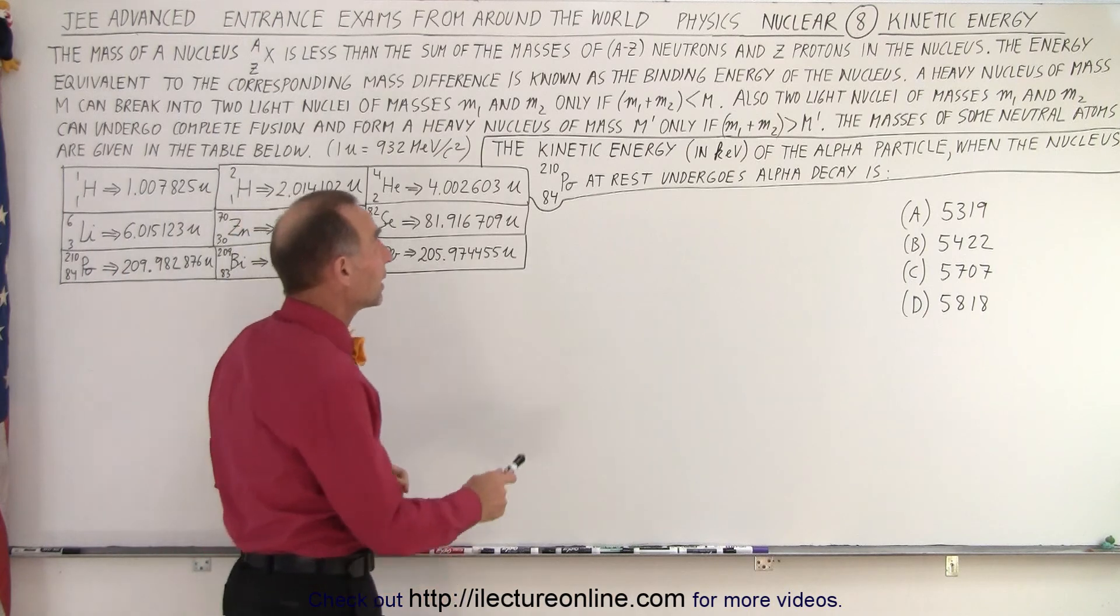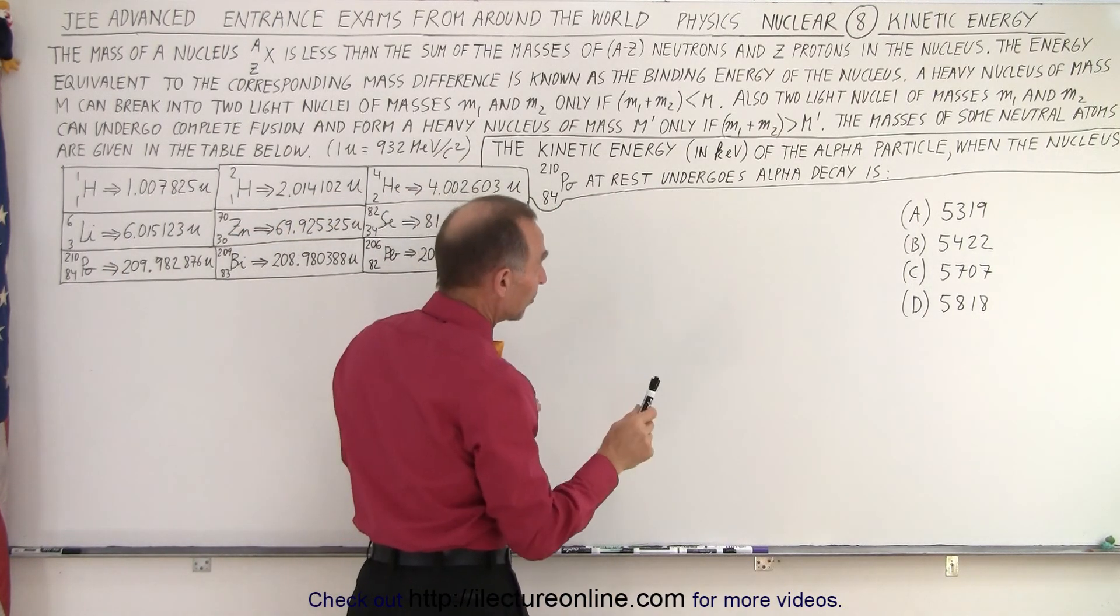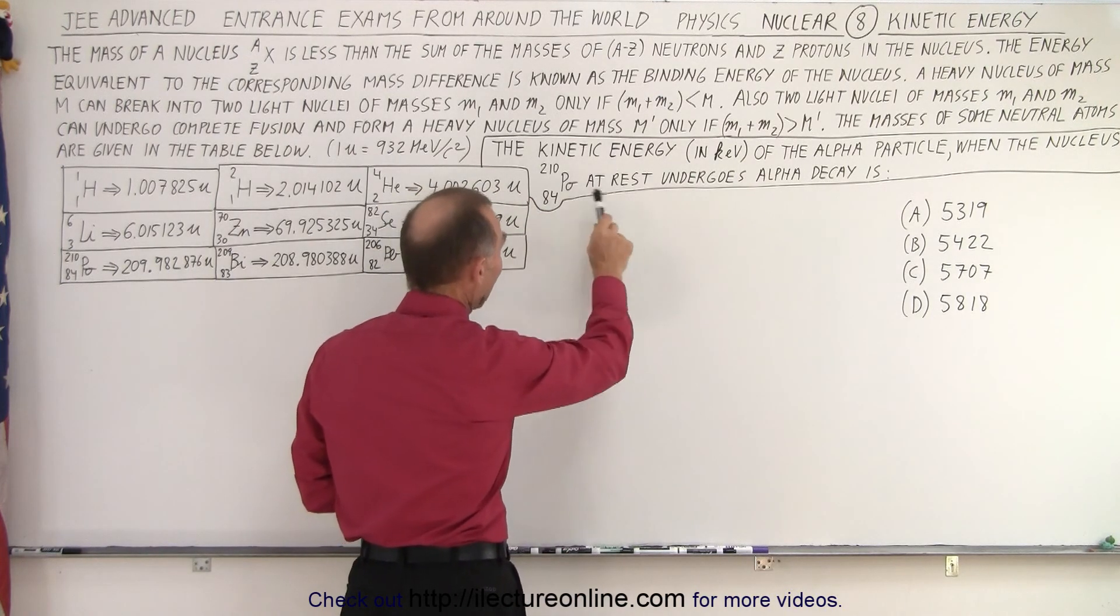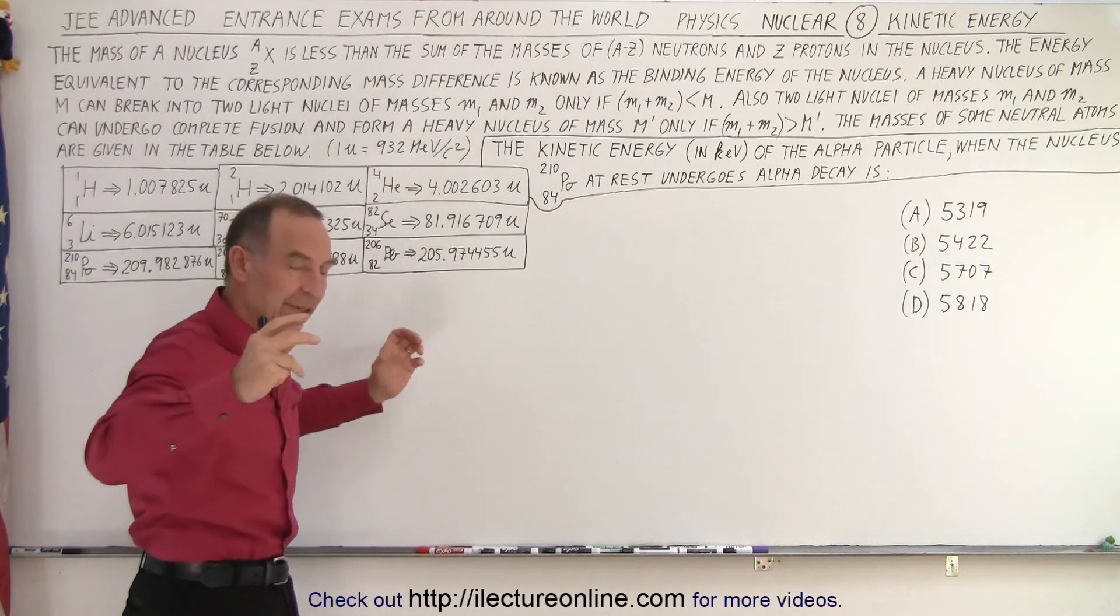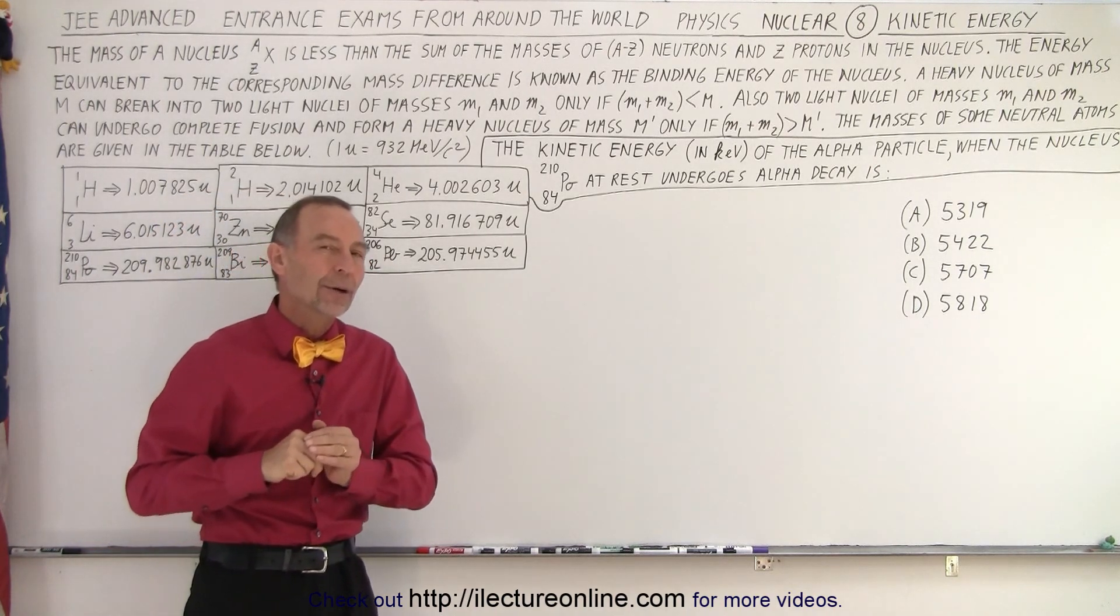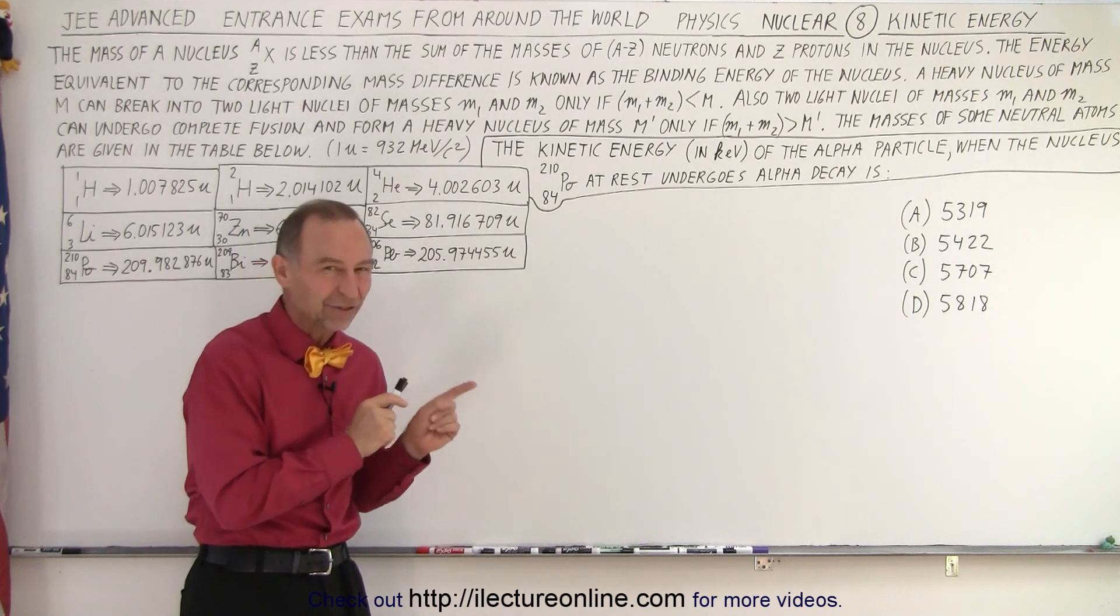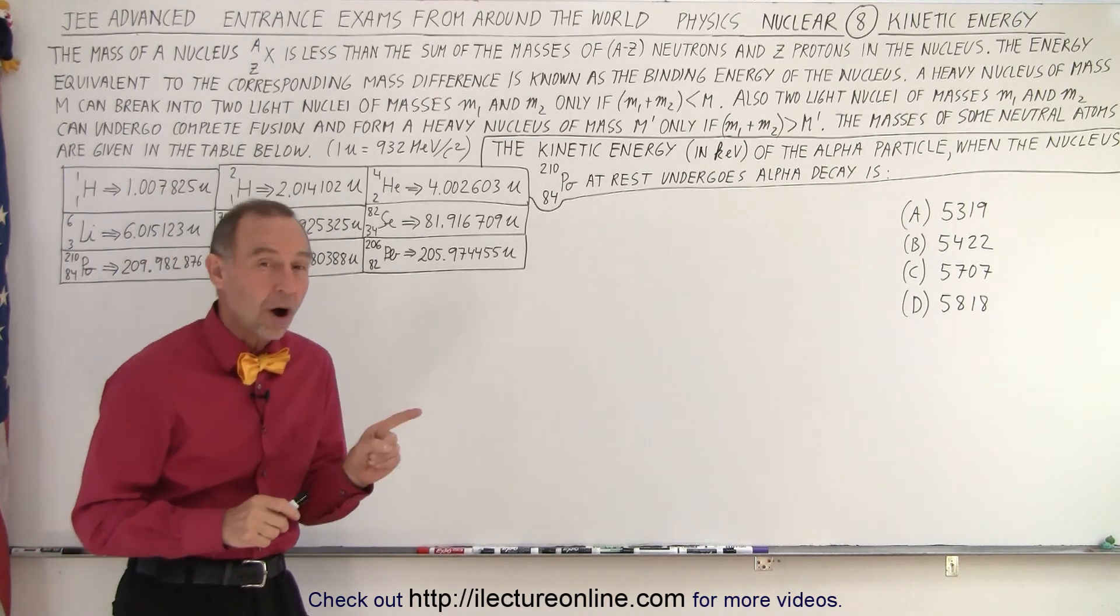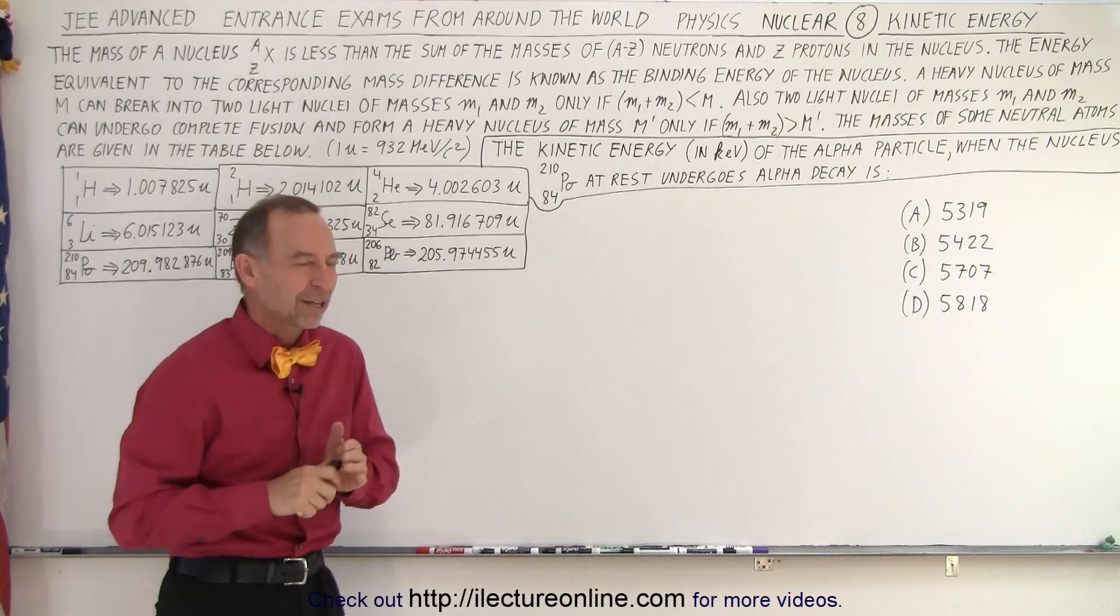The only question important here is the kinetic energy in KeV of the alpha particle when the nucleus of polonium-210 at rest undergoes alpha decay. So we have polonium-210, alpha decay, meaning it shoots out an alpha particle, and they're asking for the kinetic energy in kilo electron volts. Now, this question, especially because of the answers they give us, is a little tricky.